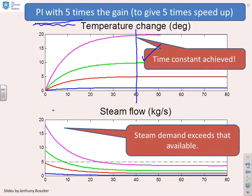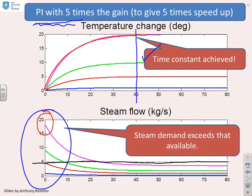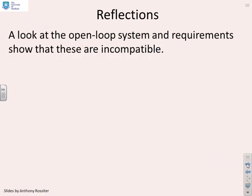However, where's the downside? If you look at the steam flows which the PI is requiring, you'll notice that in order to get a 20 degree uplift in temperature, the initial steam flow is getting pretty close to 20 kilograms per second. However, we were told you can't have more than five kilograms per second. In other words, the PI compensator is demanding much more steam than you can actually deliver.